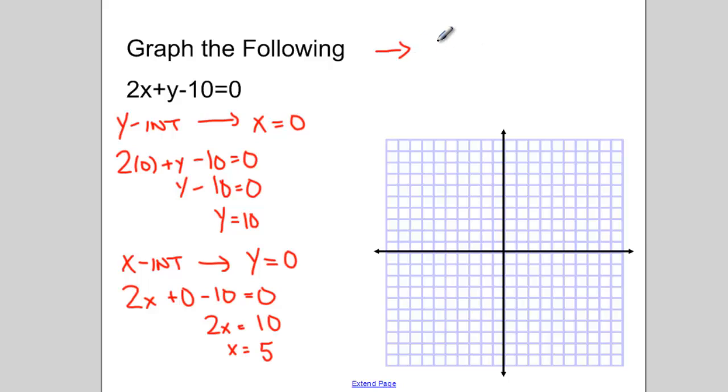So really what we've found is two points. The first point is at 0 and 10. The second point is at 5 and 0. And it's these two points that we're going to plot.